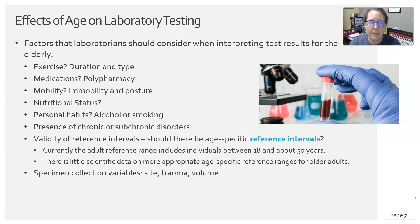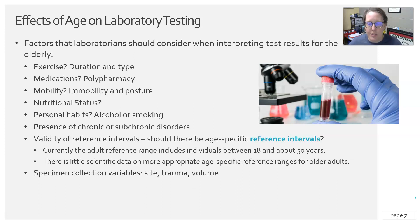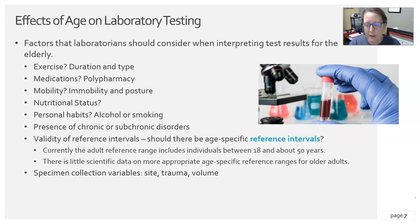An important question is: what is the validity of the reference intervals, and should there be age-specific reference intervals? Currently, lab reference intervals are based on healthy adults aged 18 to 50 years. With 20% of the population projected to be over age 65 by 2050, the question is whether we should establish specific reference ranges for older adults. Currently none have been established, but population studies would be needed to set them appropriately.